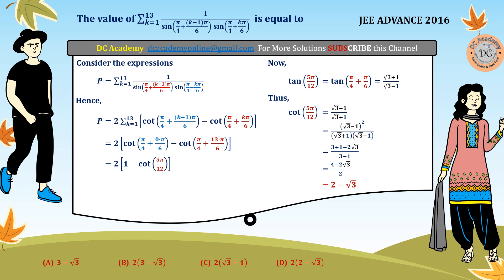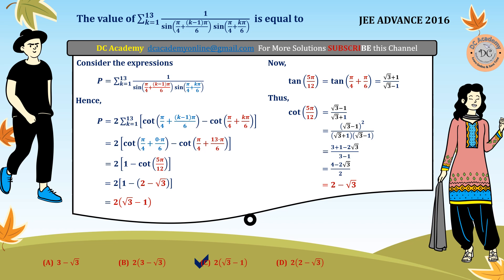Substituting cot(5π/12) = 2 − √3 back into P = 2·(1 − cot(5π/12)), we get P = 2·(1 − (2 − √3)) = 2·(√3 − 1). So the final answer is 2(√3 − 1), which means the correct option is option C. The key trick in this problem was multiplying the numerator and denominator by sin(π/6), which enabled the telescoping cancellation. Hope you understood the problem. Thank you.